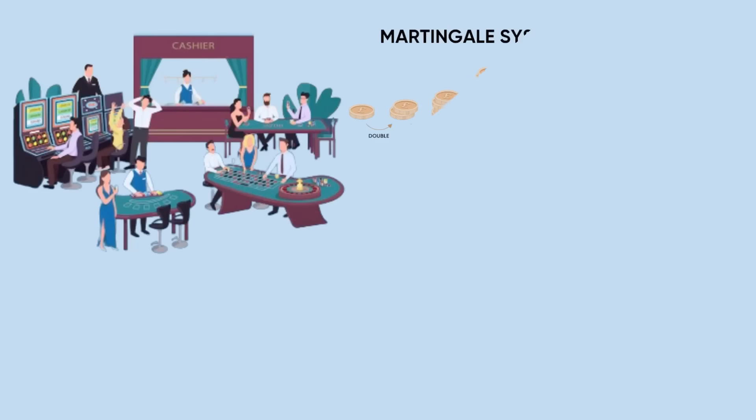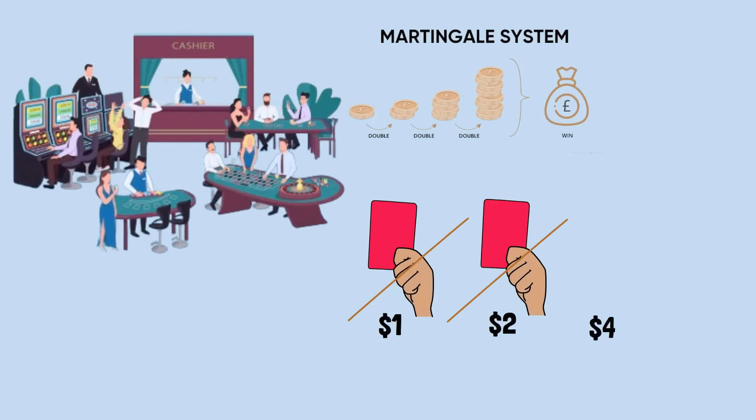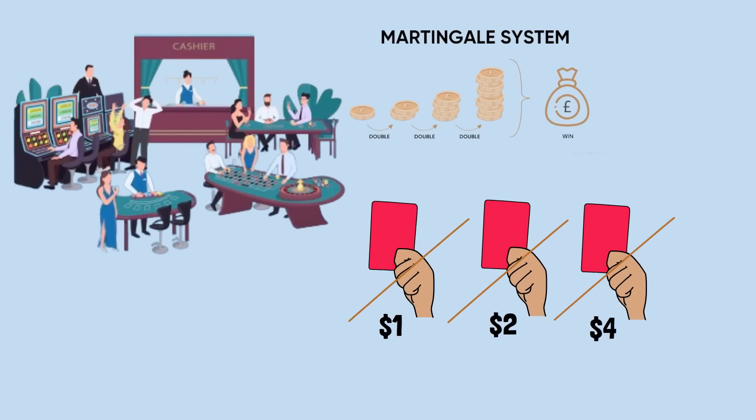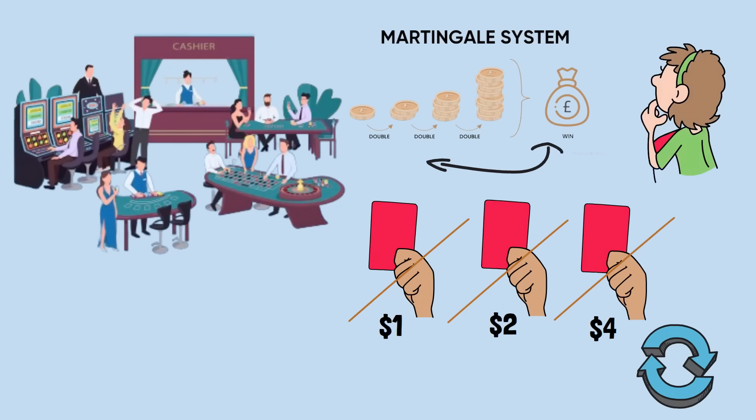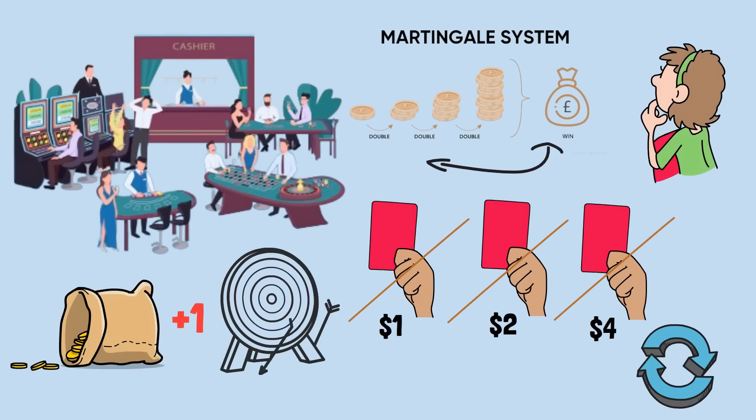Many gamblers attempt to beat the house edge using betting systems, with the Martingale system being the most famous. The idea is simple: Bet $1 on red. If you lose, bet $2. If you lose again, bet $4. Keep doubling until you win, then start over. The logic seems sound: you'll eventually win and recover all previous losses plus a $1 profit. But the mathematics reveals why this system fails spectacularly.